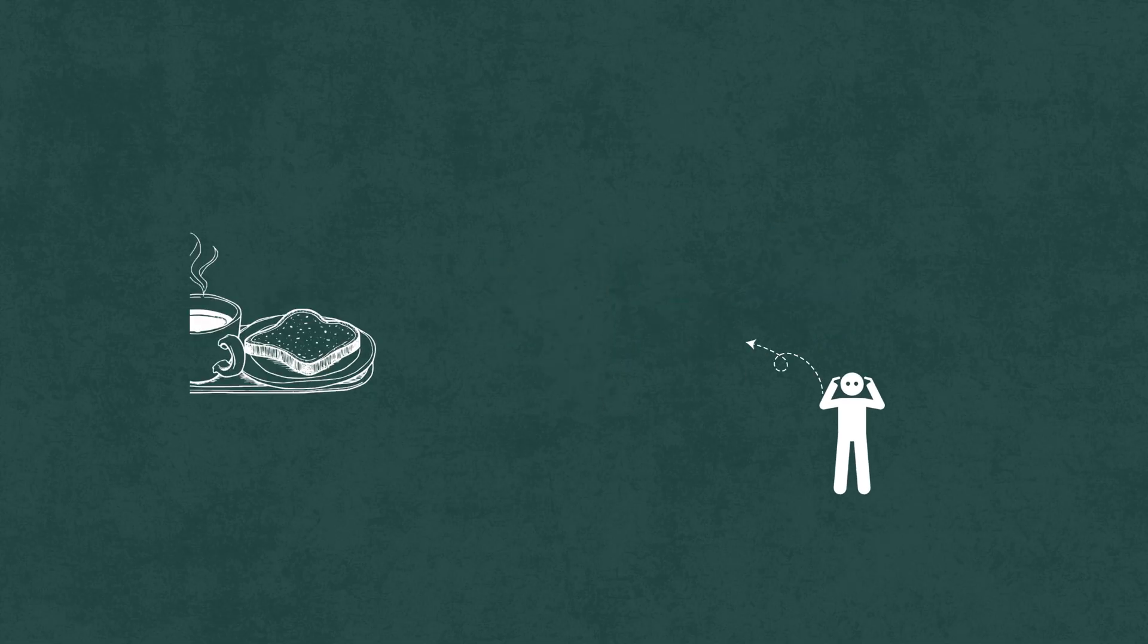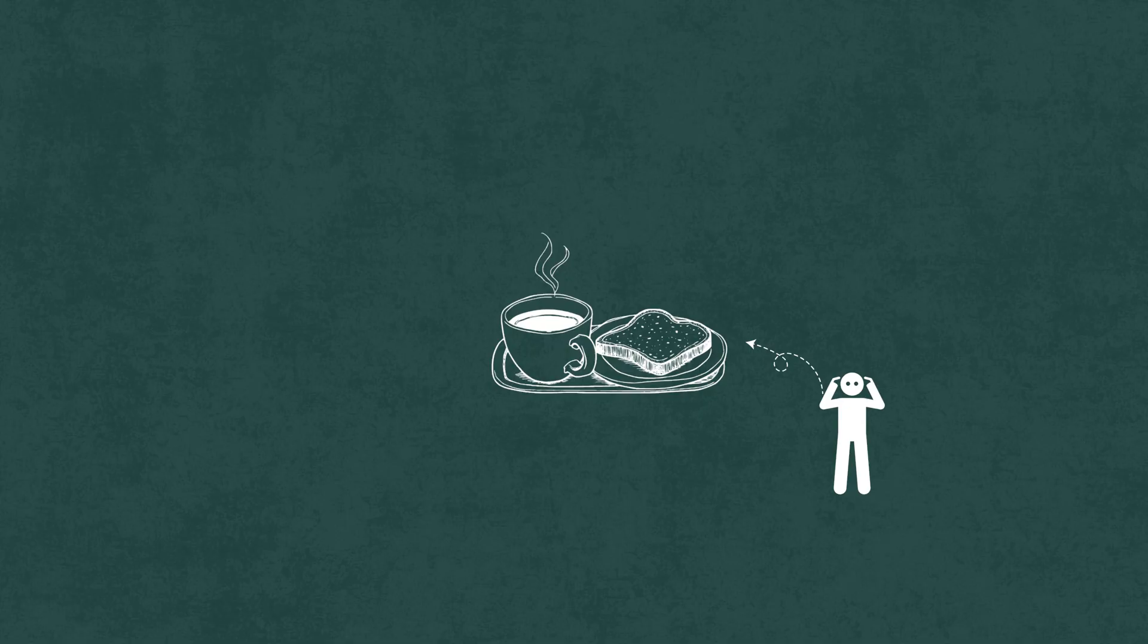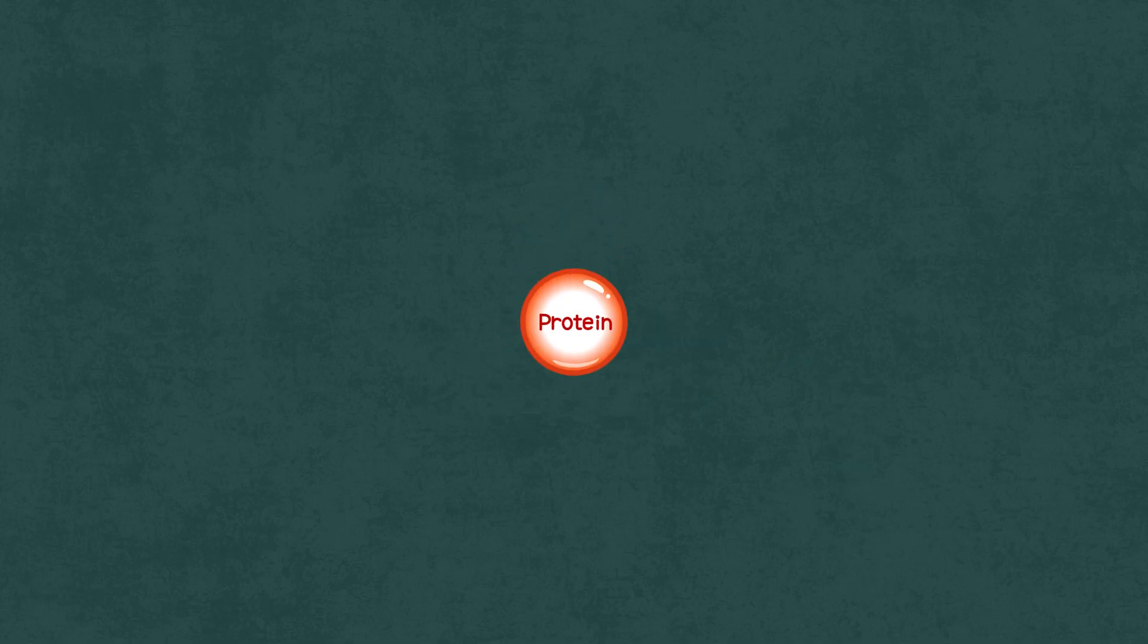So what does the perfect breakfast actually look like if you want laser focus all morning? Science says it's about three things. Protein, healthy fats, and fiber. Start with protein, at least 25 to 30 grams. That's what stabilizes your dopamine and keeps your energy consistent.